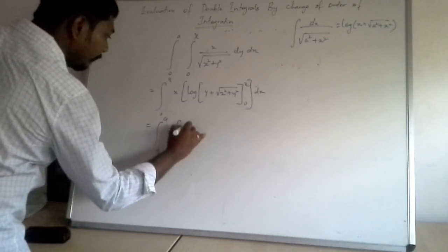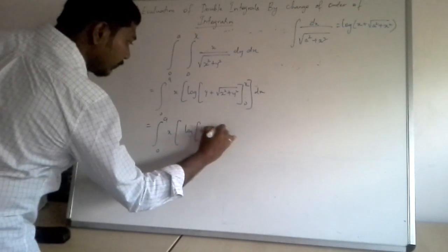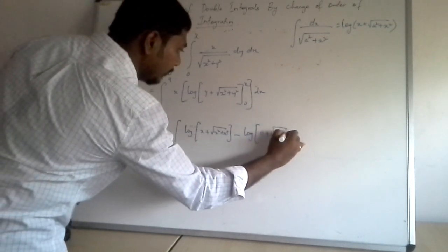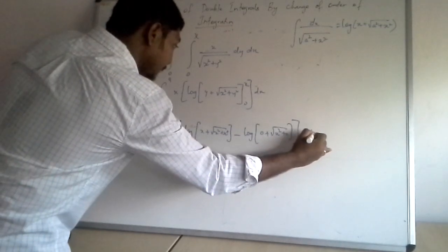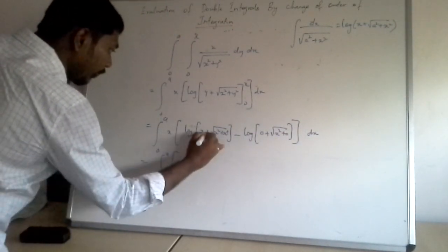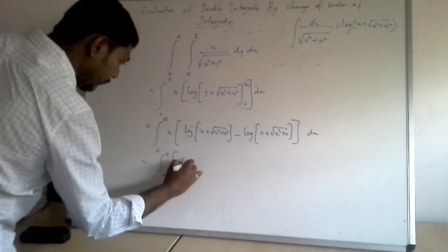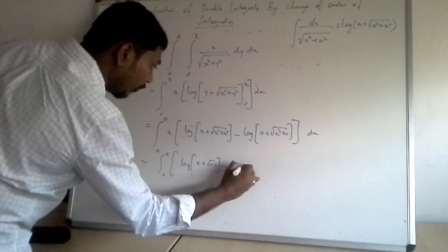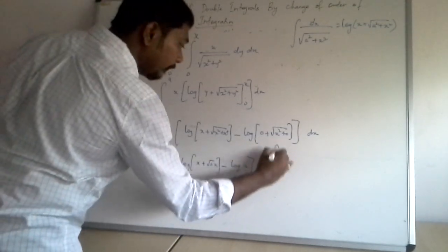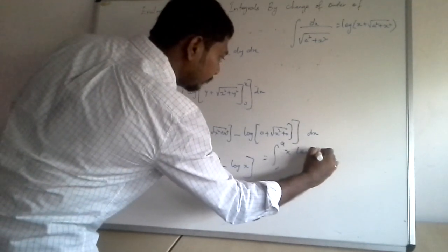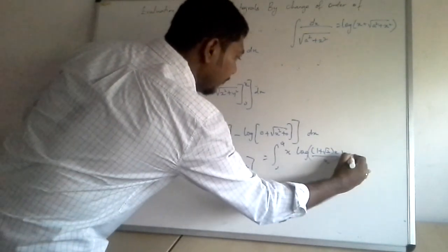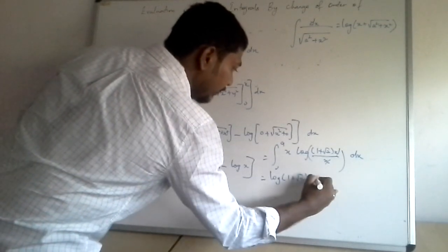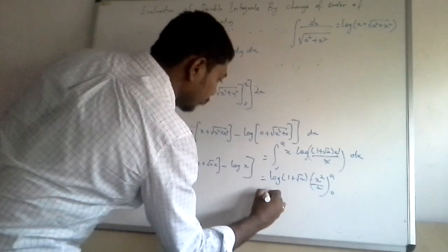Applying the limits, I get: integral from 0 to a of x times [log(x + root(x² + x²)) minus log(0 + root(x² + 0))] dx. That simplifies to log(x + root(2x²)) minus log(x), which equals log(x(1 + root 2)) minus log(x), giving x times log(1 + root 2). Since log(1 + root 2) is a constant, integrating x dx gives x²/2 from 0 to a.